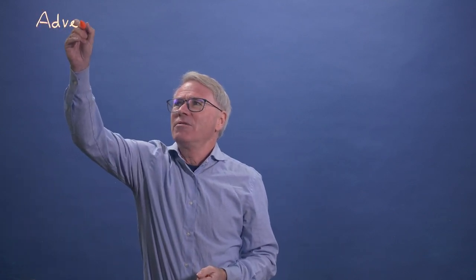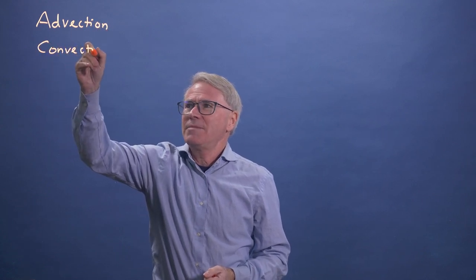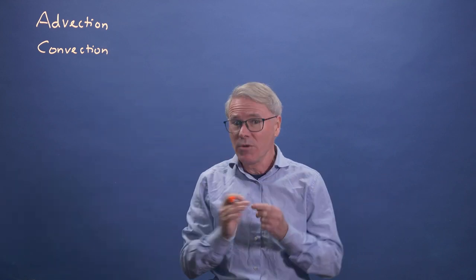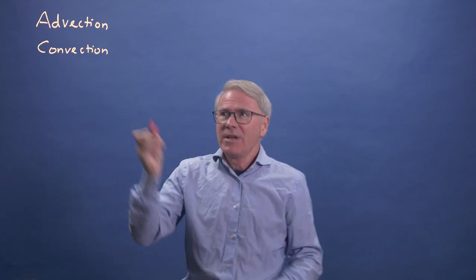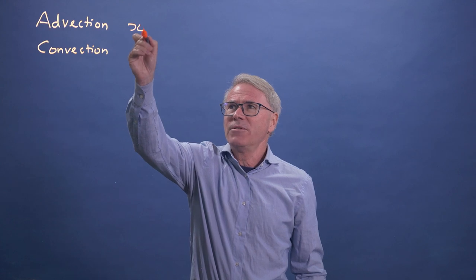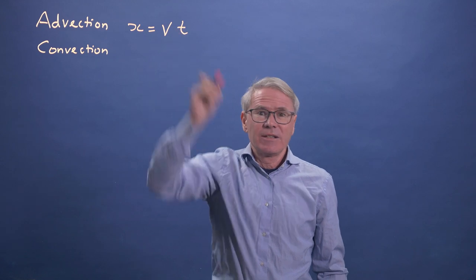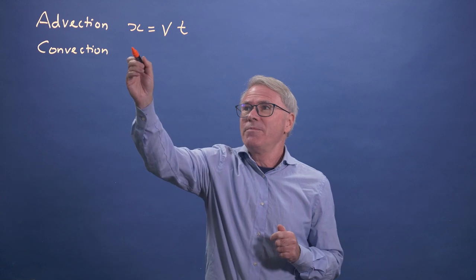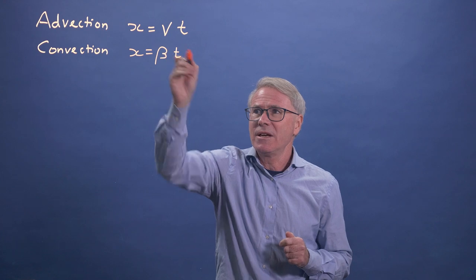We've already said this: if we've got advection, or if it's heat transport, convection, it's basically linear flow. Things scale with time — you're going at a certain speed, something's been injected. So the distance you travel basically scales as velocity times time. If it's convection, using the nomenclature from previous videos, beta was your effective speed times time.